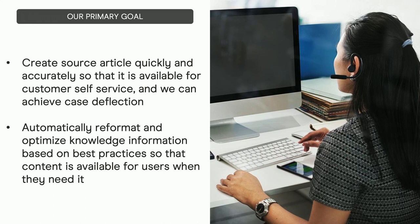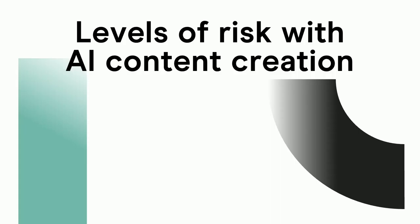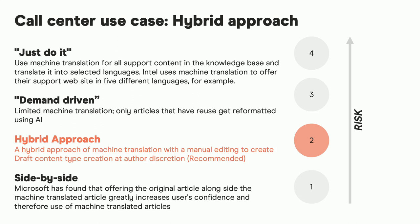The purpose of this first demo is to show how we can use AI to create source article content quickly and accurately for customer self-service to achieve case deflection. If you operate a call center and your job is to handle calls 24/7, any efforts to help the customer self-service represent savings that organizations can reinvest elsewhere. In the call center use case, we're using a hybrid approach of machine-learning-generated text with manual editing to achieve a first draft that can be published so customers can find it.